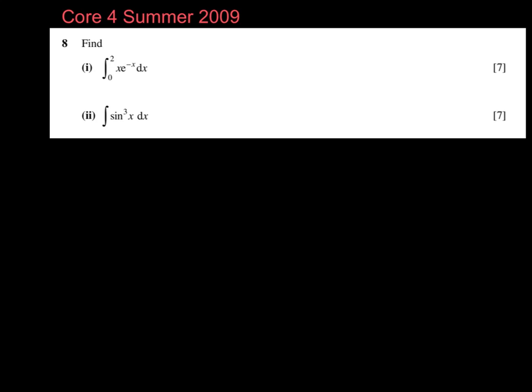So we have to decide what's going to be our u and what's going to be our dv dx. I'm going to let u equal x because when I find du dx, I'm going to get 1.